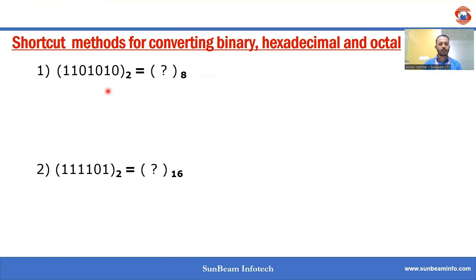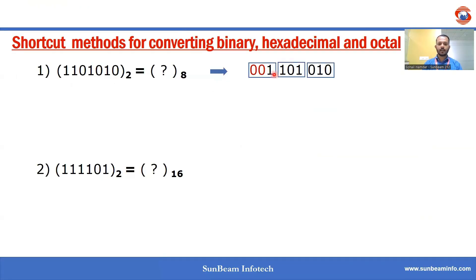First, binary to octal. For converting the binary number 1101010 to octal, we need to write the binary in pairs of three bits. We added two zeros to complete the grouping, giving us 001, 101, and 010, which are 1, 5, and 2 respectively. So we have converted this binary to octal as 152.